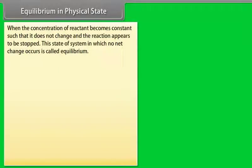Equilibrium in Physical State. When the concentration of reactant becomes constant such that it does not change and the reaction appears to be stopped, the state of the system in which no net change occurs is called equilibrium.